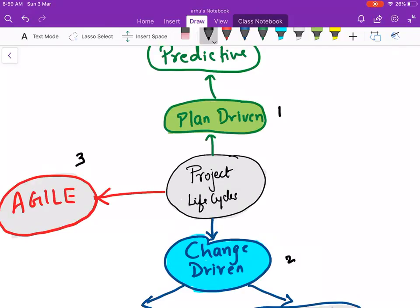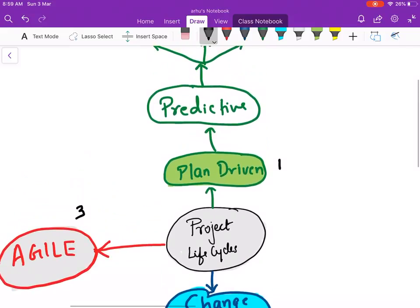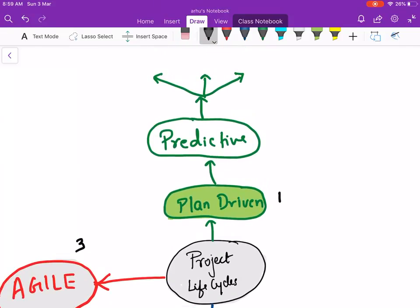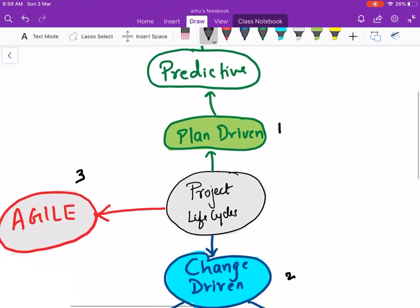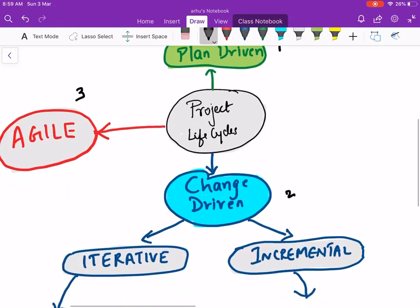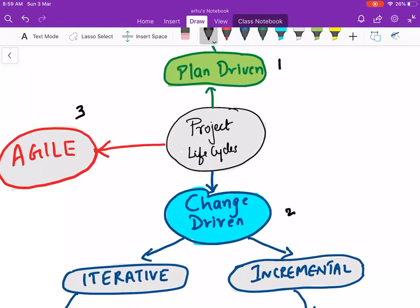Let's understand what is a plan driven life cycle. A plan driven life cycle is called as predictive life cycle. A change driven life cycle is also called as iterative or incremental. There are two categories in this. Let's try to understand how a project life cycle becomes iterative or incremental.